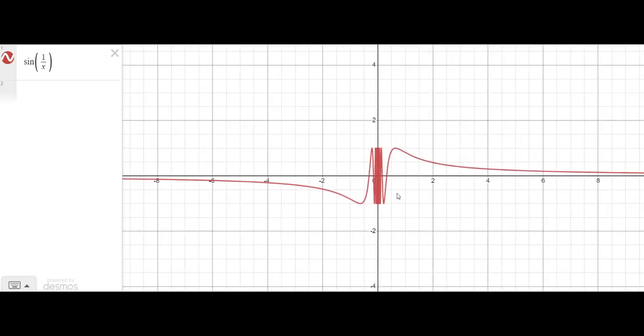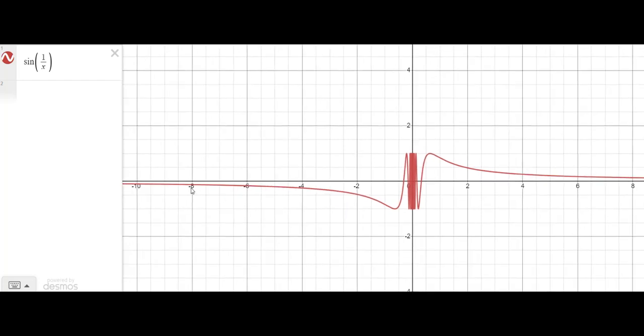It looks like as X goes to infinity or minus infinity, you just get a little horizontal asymptote at zero, which makes sense because when X gets very, very large, whether positive or negative, one over X is going to get very, very small. In fact, it'll be getting close to zero. And sine of zero is zero, so it's not surprising that in the limit to the left and the right, we go to zero.